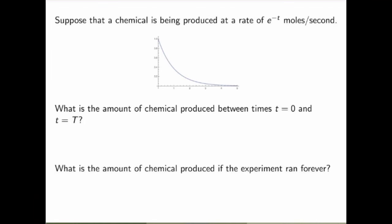Let me start with a motivational example. Suppose that a chemical is being produced at a rate of e to the minus t moles per second. I've got a graph here where I've plotted the rate of production of the chemical. If I ask you to calculate the amount of chemical produced between times t equals zero and t equals capital T, you probably know how to do it. You want to integrate the rate of production between t equals zero and t equals capital T.